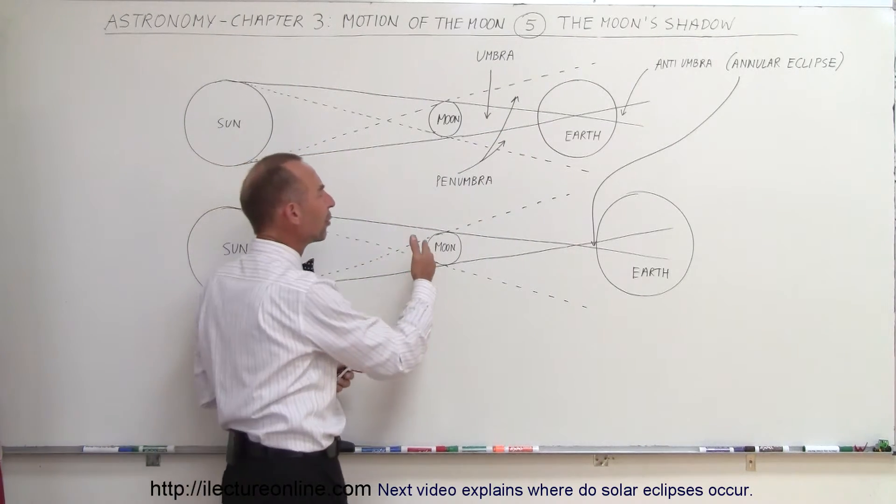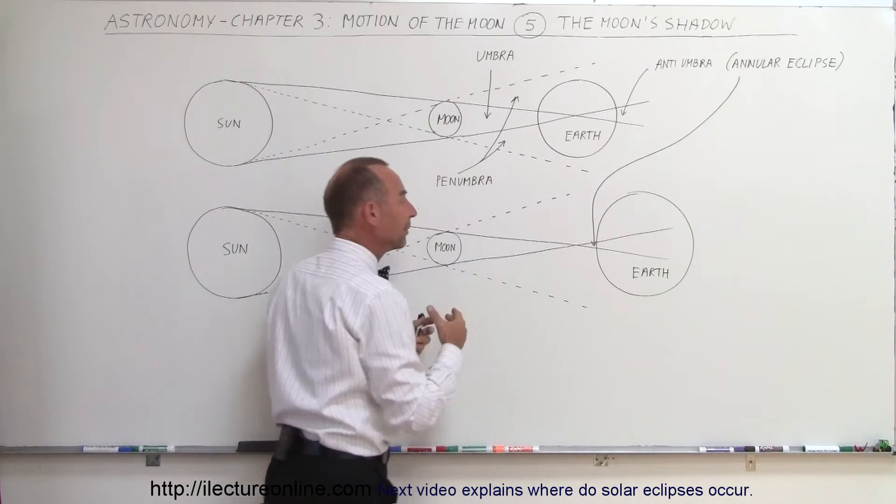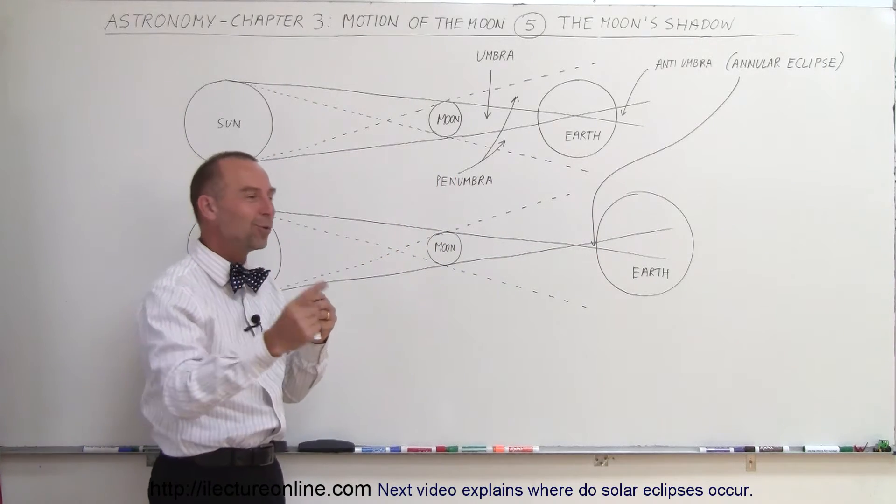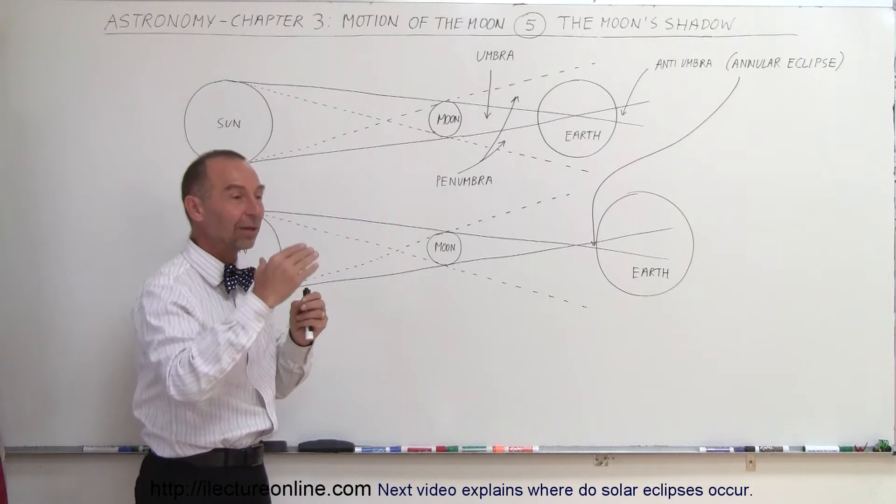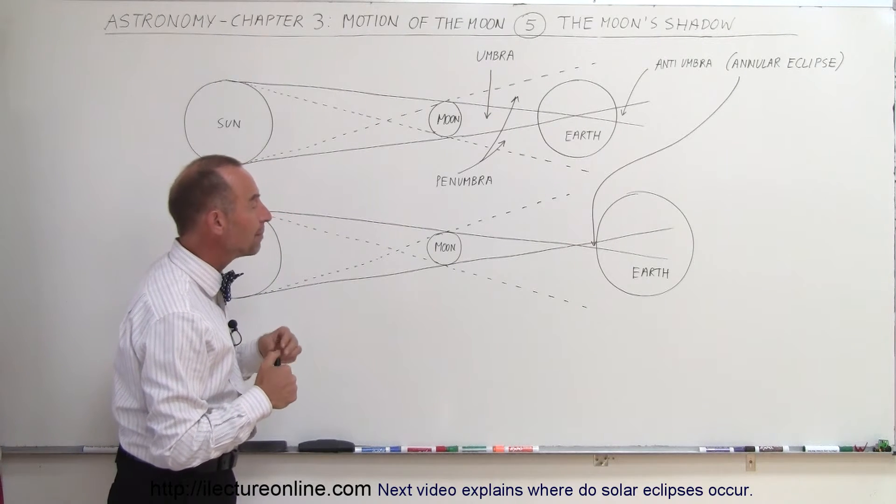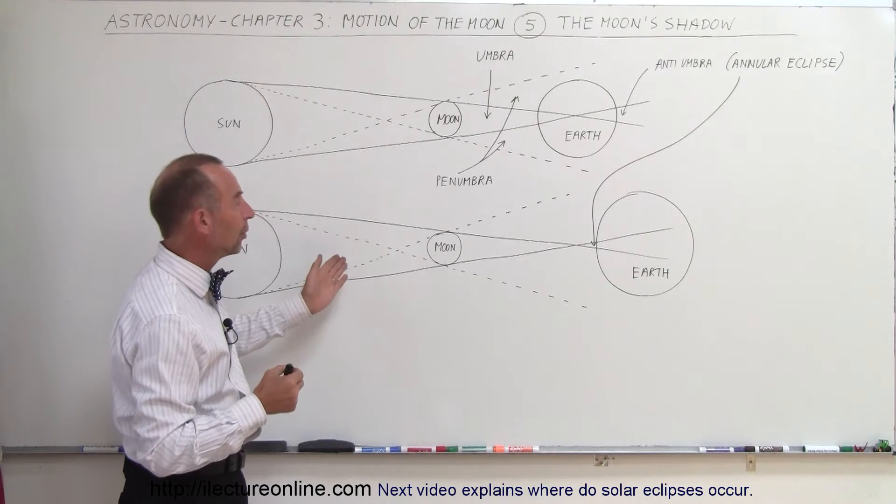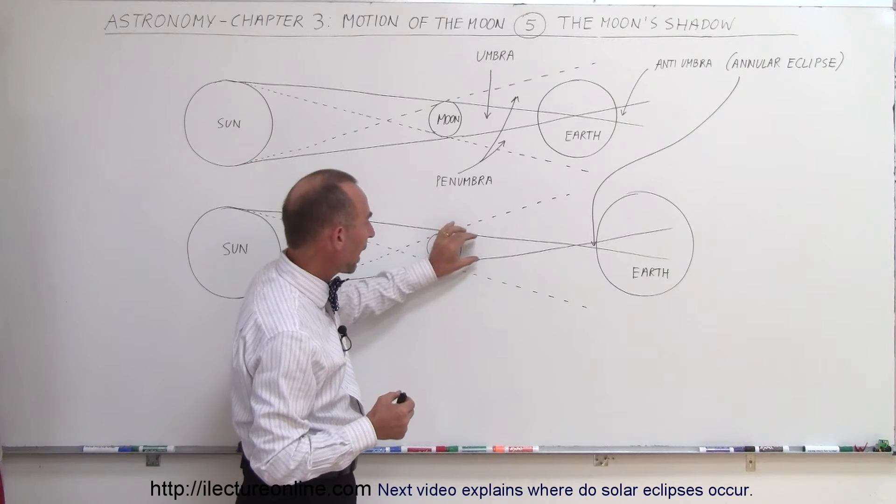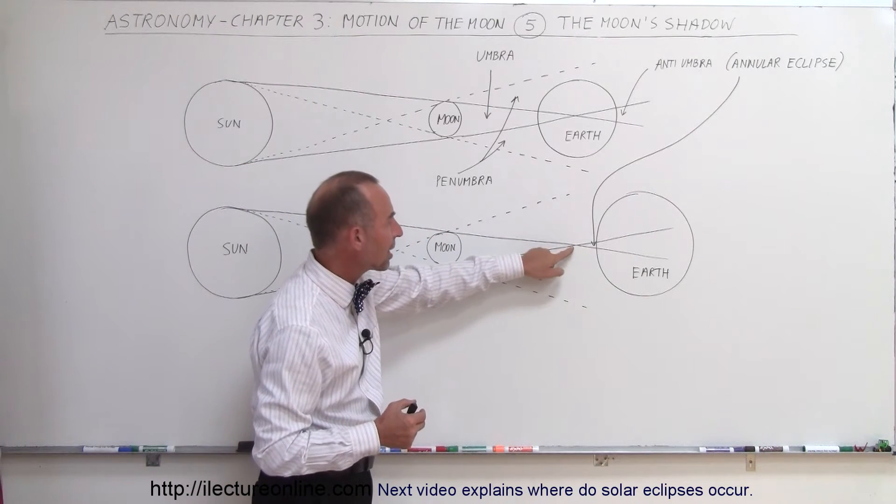But sometimes the earth is farther away from the moon. Not that the earth moves, but that the moon's orbit of course is elliptical and sometimes it's farther away when it's at the apogee. And so therefore the moon's shadow actually comes to a stop right here.